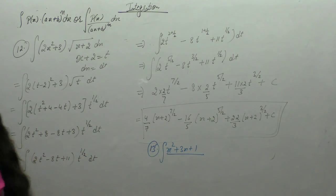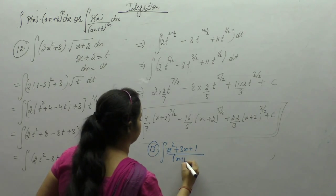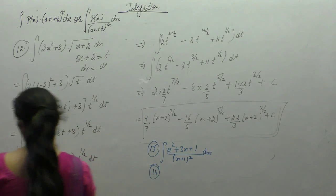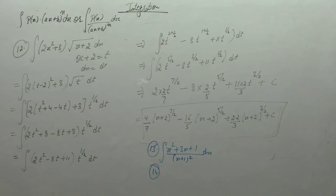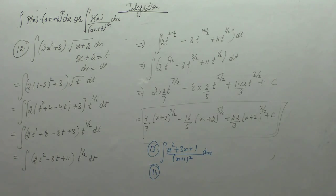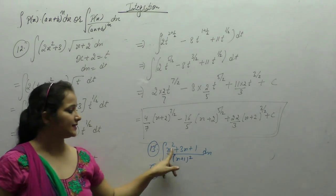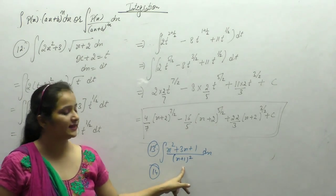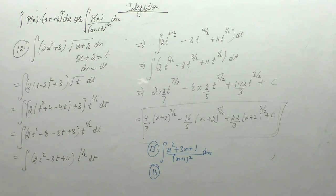For the integral of (x plus 3)(x plus 3) over (x plus 1) whole square: the degree of the numerator equals the degree of the denominator, so first we divide and then solve the integral.